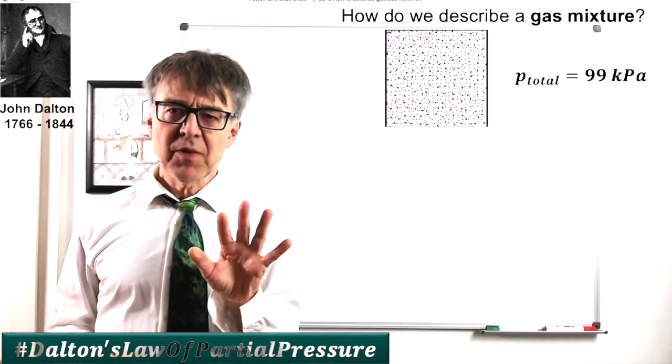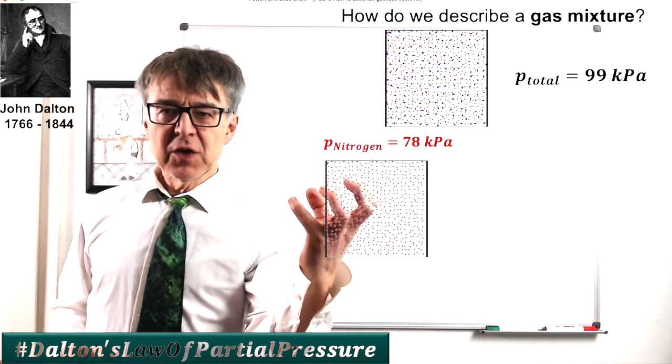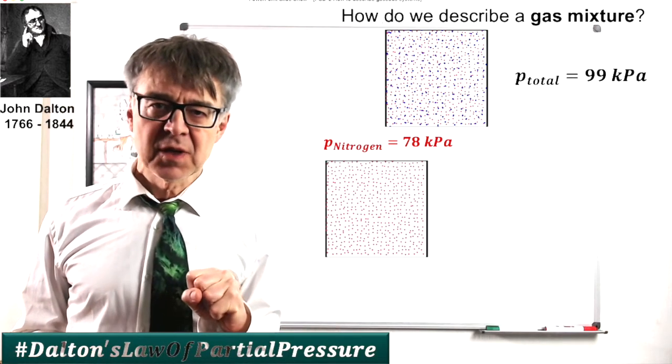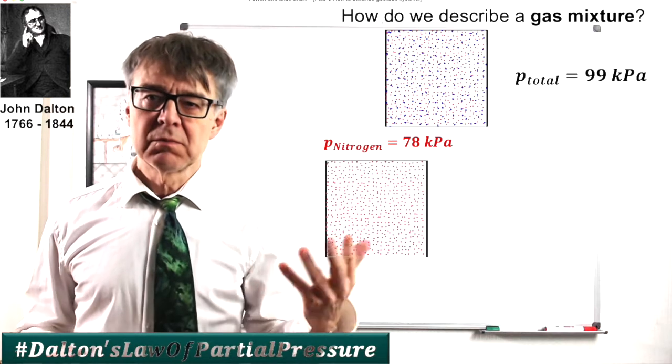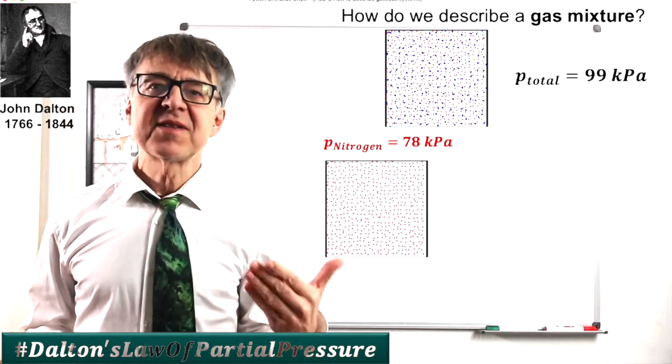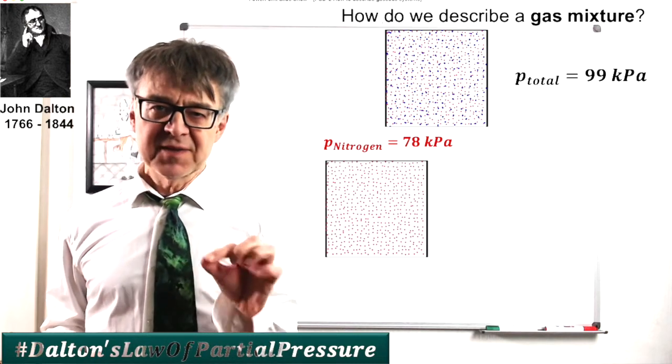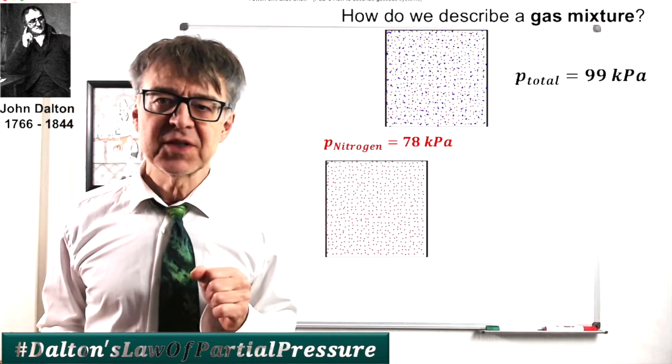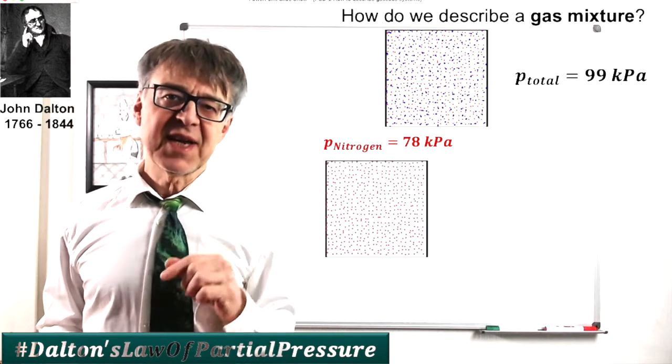Imagine what happens to the pressure if we removed all but one of the components. We will end up with only the nitrogen particles, which will exert a smaller pressure. This partial pressure, as John Dalton called it, would be 78 kilopascals.